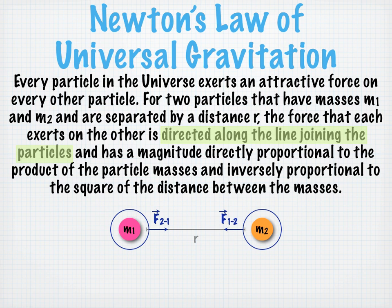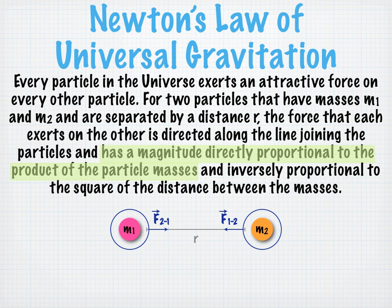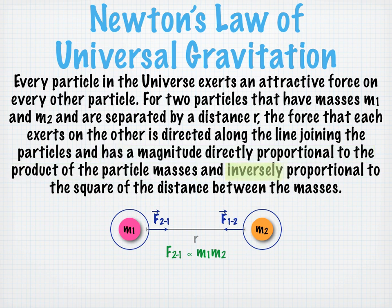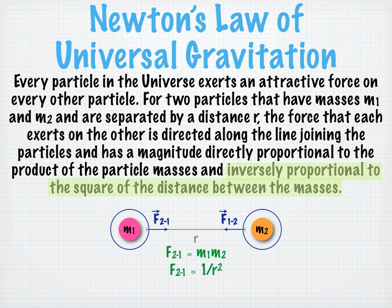Each force has a magnitude that's directly proportional to the product of the particle masses. So the attractive force on mass 1 from mass 2, for example, is directly proportional to m1 times m2. The force is also inversely proportional to the square of the distance between the masses. So our force is inversely proportional to r squared. From these proportionalities, we can build our equation for universal gravitation.